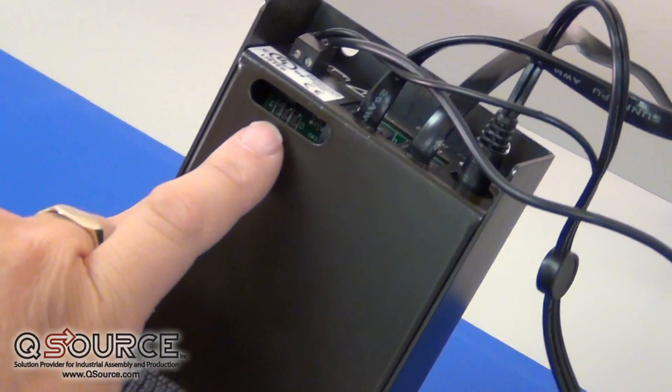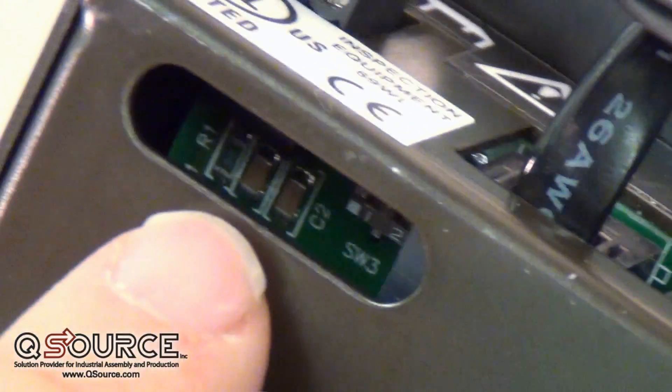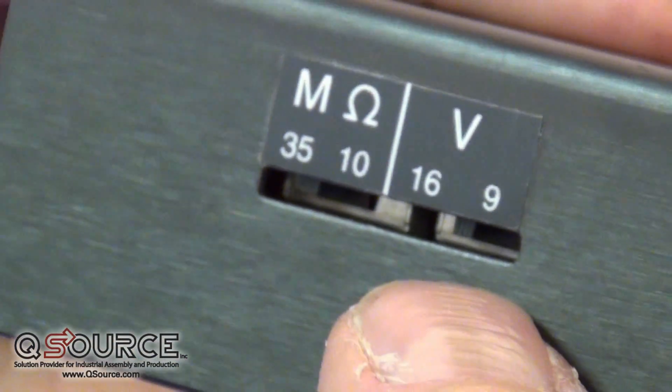On the bottom of the unit, we have an audible alarm volume control. On the side of the unit, we can control the sensitivity, either 9 or 16 volts test circuitry and 10 or 35 megaohms test circuitry.